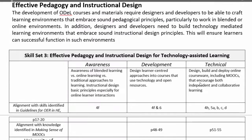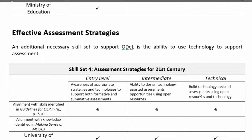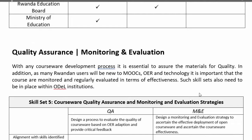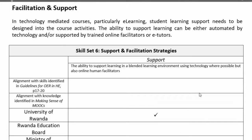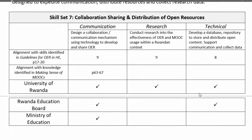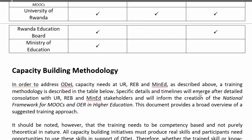The third group is really effective pedagogy and instructional design for technology-assisted learning. A lot of the principles come from good old-fashioned distance education, but educators need to be aware of how technology and pedagogy go together in order to elicit efficient learning. The fourth set covers assessment strategies, then there's one on quality assurance, and we've even got one on how to provide support and facilitation and how to collaborate and share. The idea was that the three institutions and other stakeholders would weigh in and tell us whether they believe these skills were in place or required, and based on that audit, we could come up with a capacity building methodology.